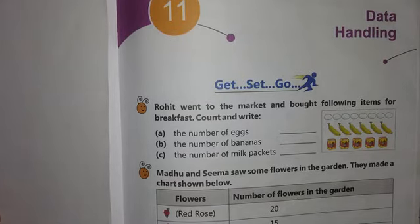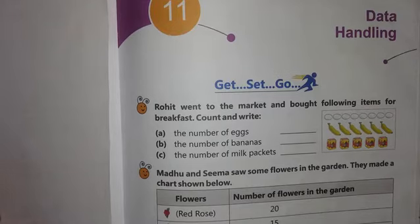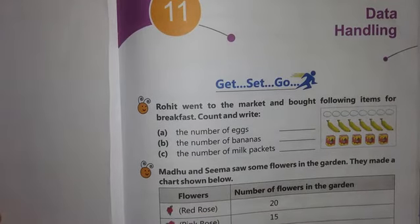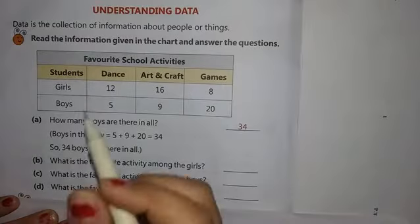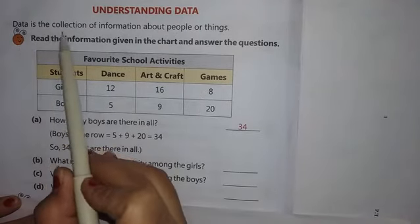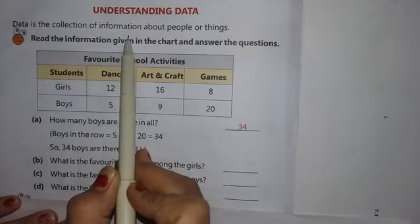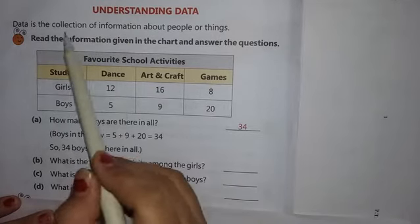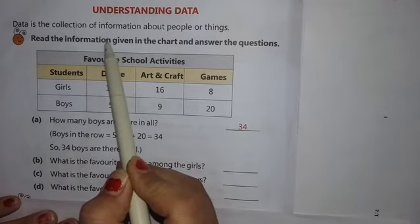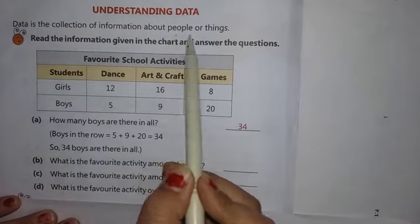Welcome back students. After a short break, today we are going to start with periodic assessment 3 syllabus, and the very first chapter is chapter number 11: data handling. First of all, we will start with understanding data. What is data? Data is the collection of information about people or things. Data ka matlab hota hai information ko collect karna — information kisi bhi form mein ho sakti hai, it can be about people aur it can be about things.